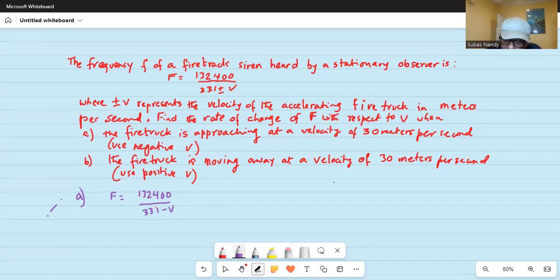So, the derivative of f with respect to v is equal to minus 132,000 times the power of 331 minus v is minus 1 when brought to the numerator. So, it will be 331 minus v and minus 1, minus 1 is minus 2, derivative with respect to v and then the derivative of minus v with respect to v is minus 1.